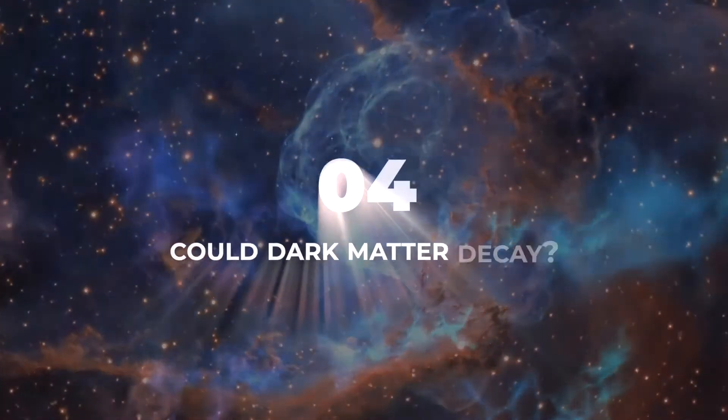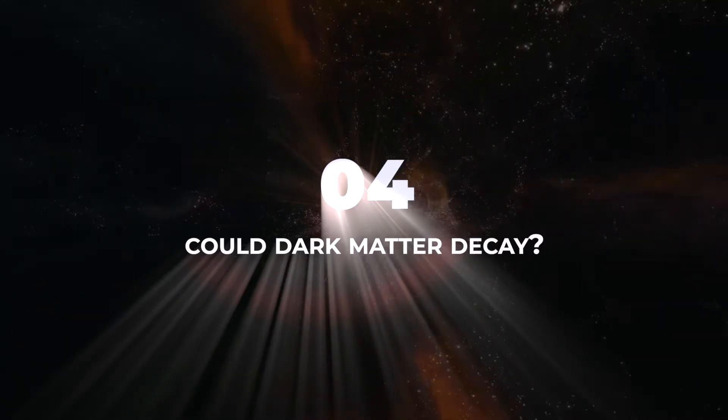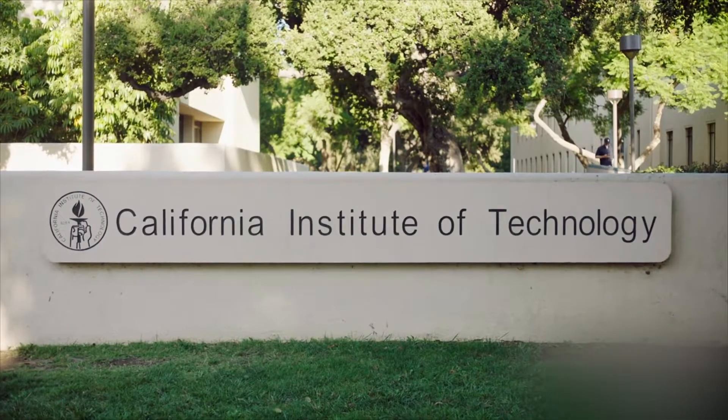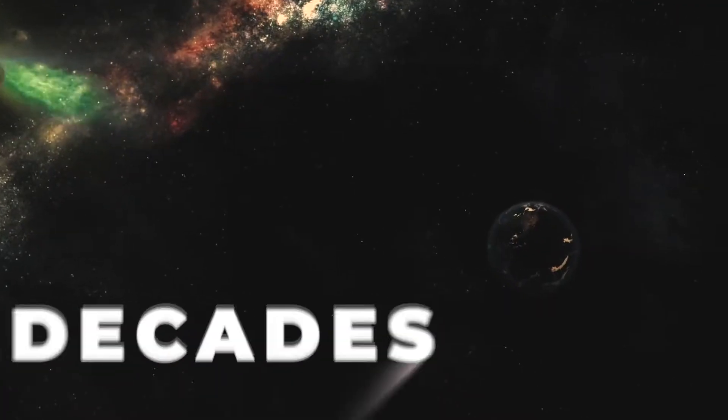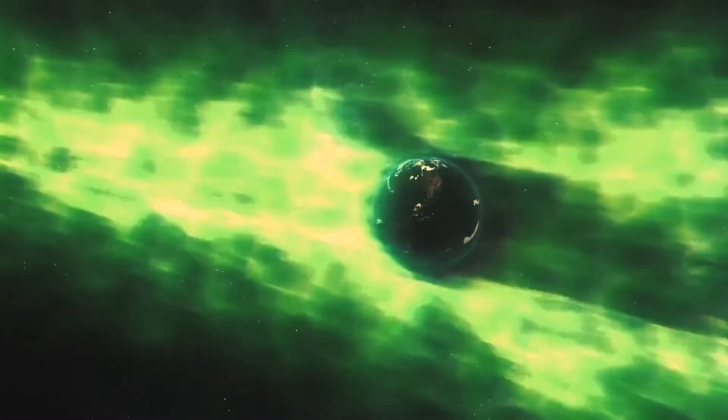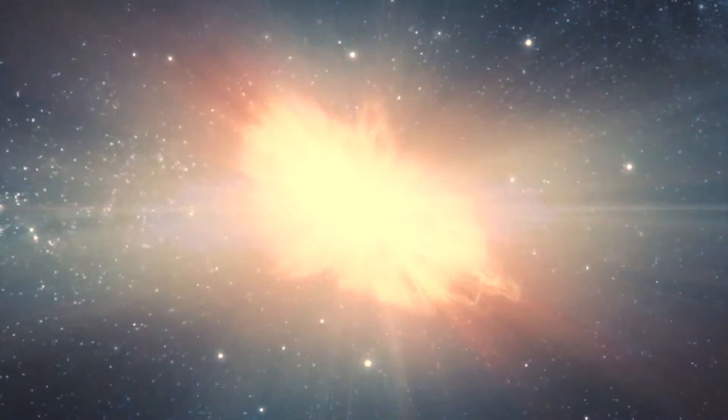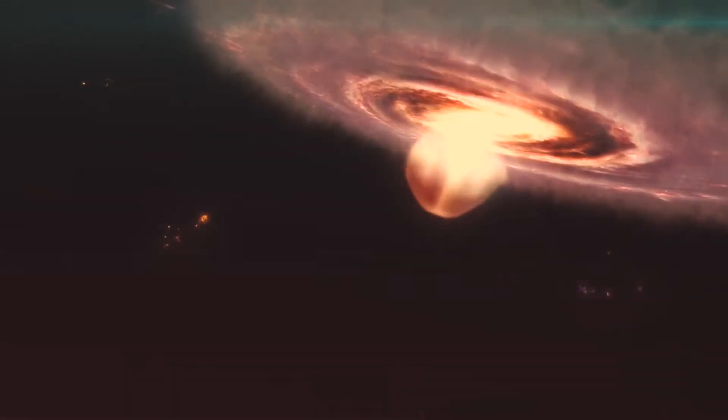Number 4. Dark matter may decay, giving off powerful radiation as a byproduct. A new look at dark matter might lead scientists to uncovering the answer to a mystery that has been around for decades. Gamma rays are the most powerful form of radiation that we have found in the universe, and can only be created through powerful events such as supernovas and a black hole feeding on matter.